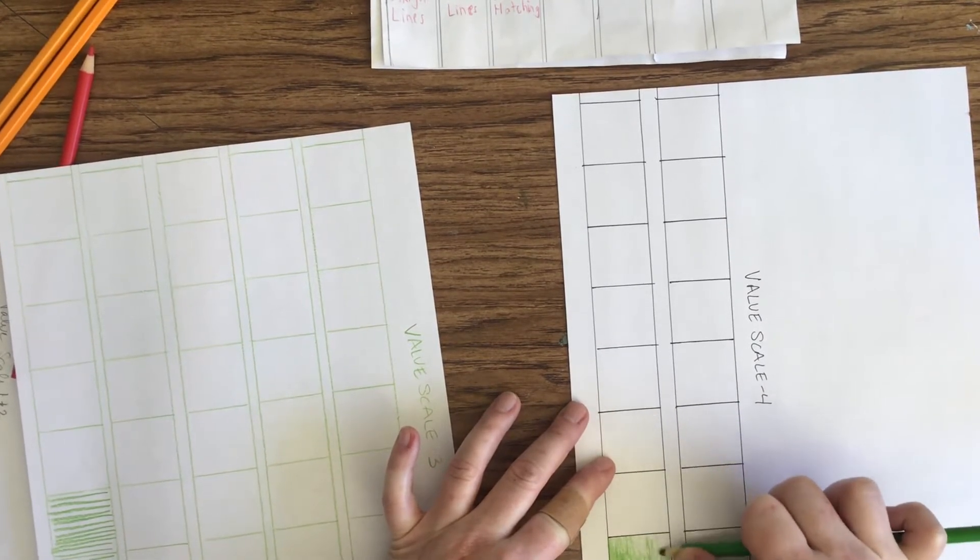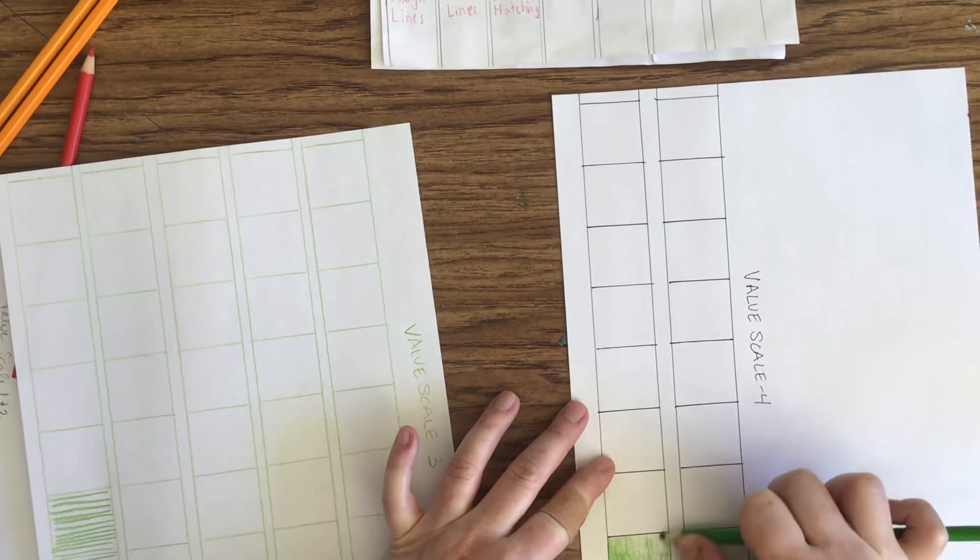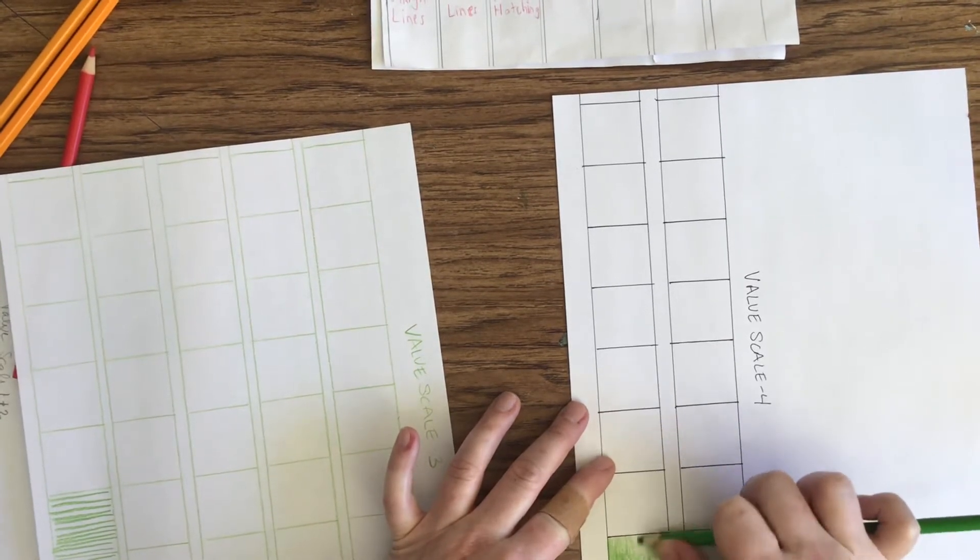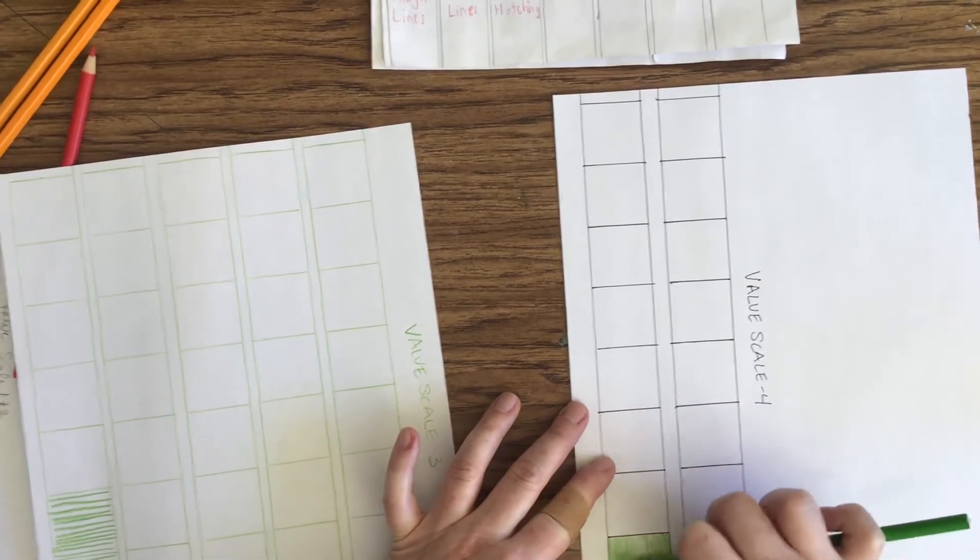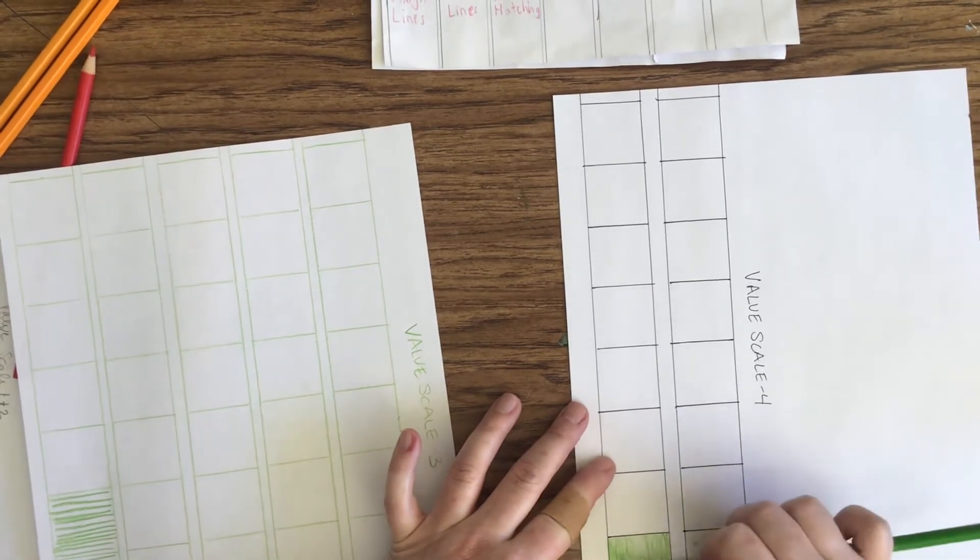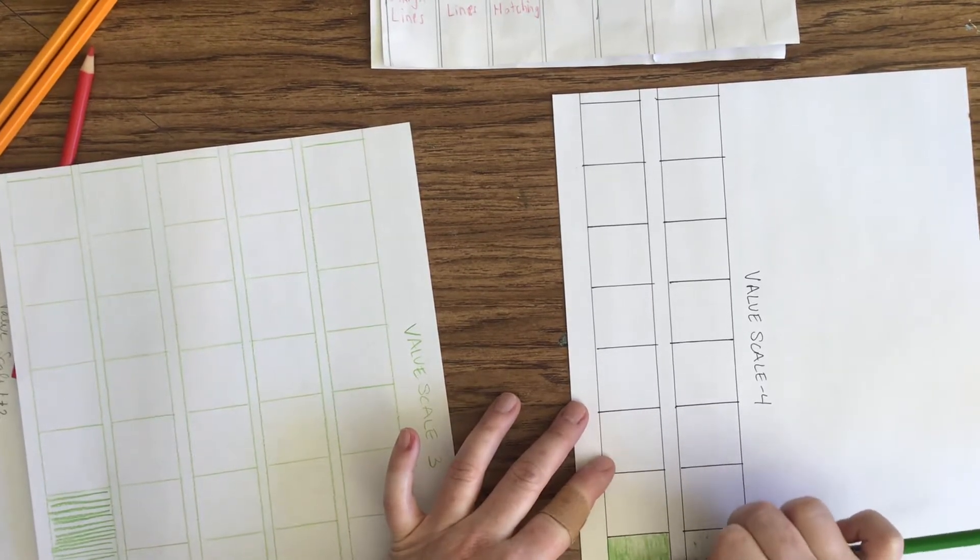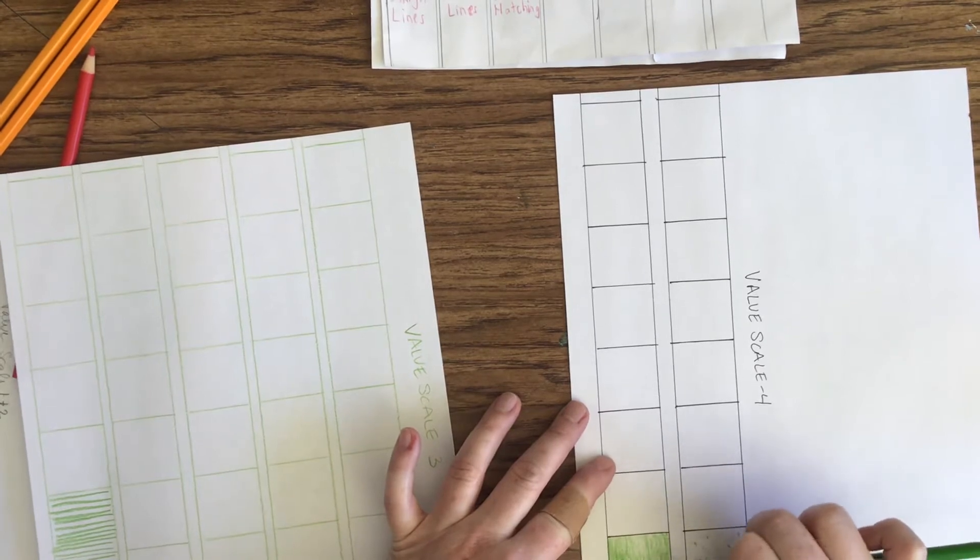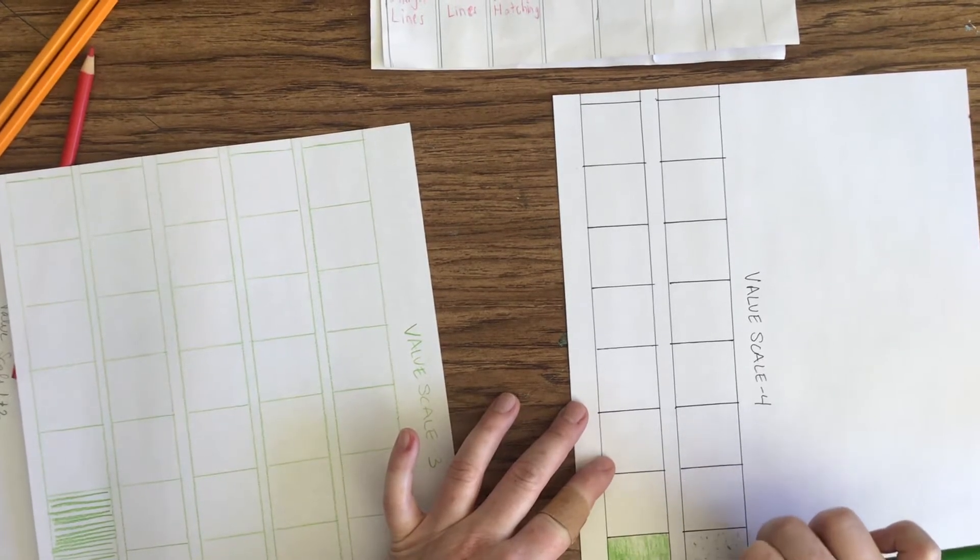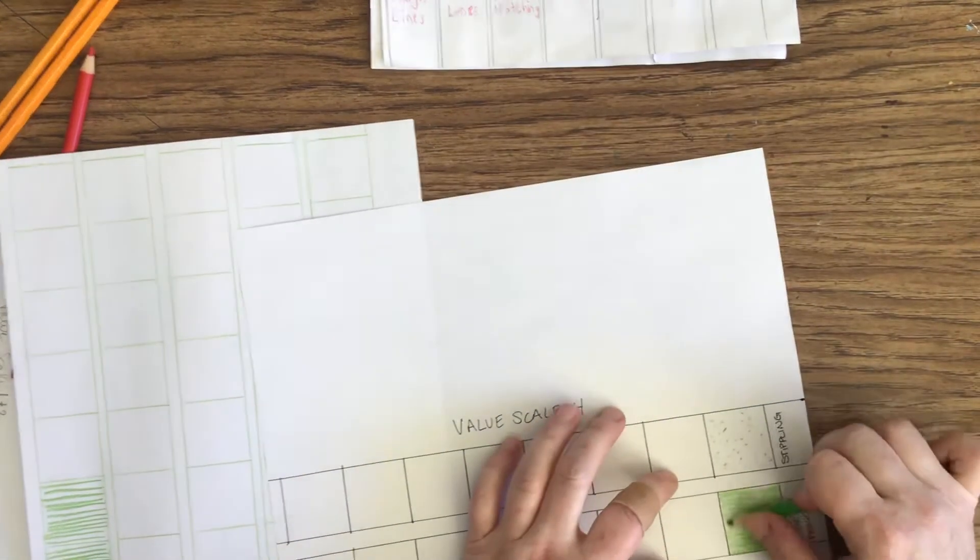Plus you could see some of the lines of where the pencil line connected and I don't want to see that either, so we're moving past coloring like middle schoolers. So to smooth that out, remember you go the different direction.